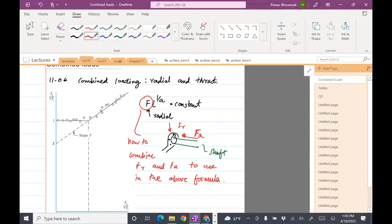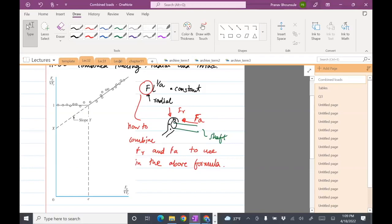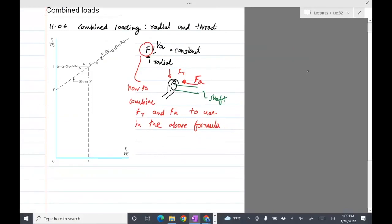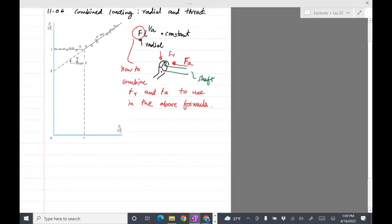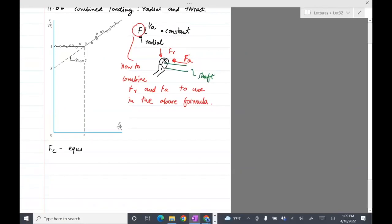So one guess is you could just take the, since they're 90 degrees apart, you could just take the square root of sum of squares, which we normally do for the resultant, and use that. But that's not a good way. What people have done is they've resorted to experiments to figure out what's the best way to combine the loads. And that plot is actually shown over here. So what we do is we define what is known as an equivalent load.